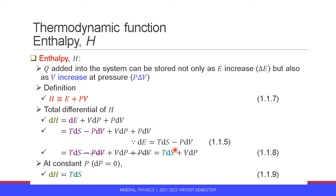This means the increase of enthalpy can be made by entropy increase at temperature or pressure increase with volume. At constant pressure, namely dP equals zero, the increase of enthalpy dH is equal to T times dS — entropy increase at temperature — equation 1.1.9.